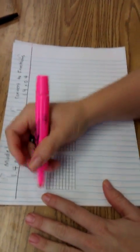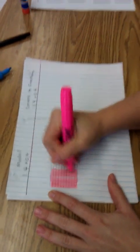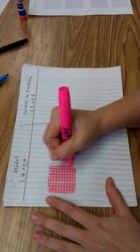So one whole would be this entire square, because I know there's 100 squares there. And that's one whole.